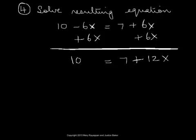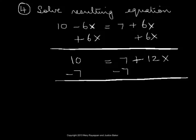Now to bring the numbers to the same side, we subtract 7 from both sides. We will have 3 equals 12x.